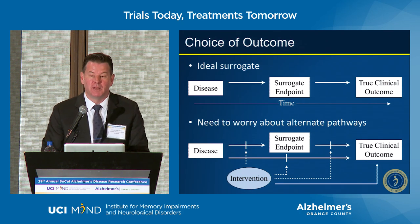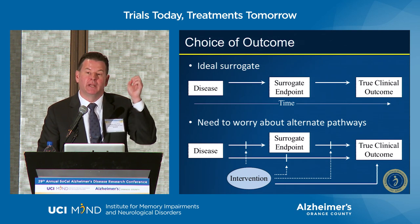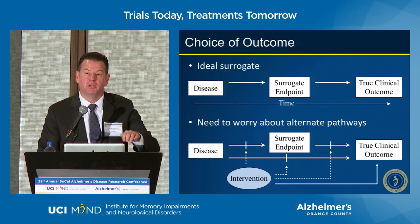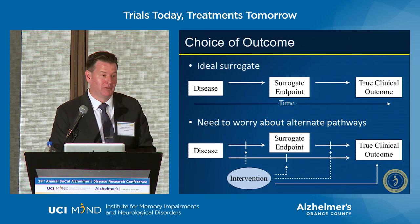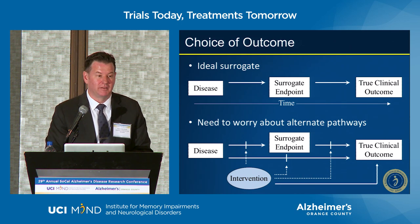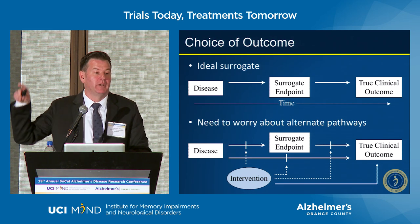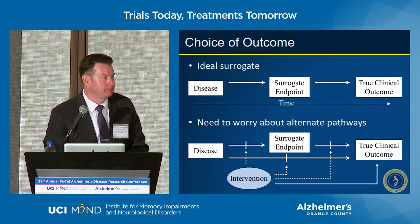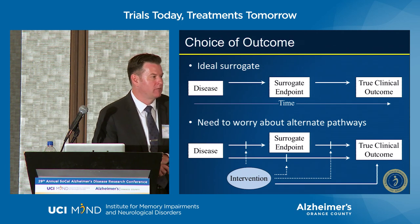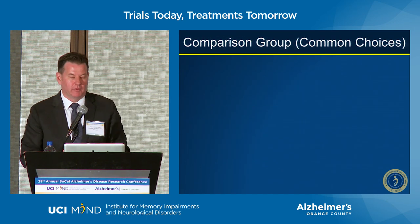A very famous clinical trial called the CAST trial looked at encainide and flecainide. They hypothesized that reducing arrhythmias would reduce mortality from heart attacks. The trial did reduce arrhythmia risk by about 50% — impressive. The trial stopped early. Why? Because there was a two-fold increase in death rate associated with encainide and flecainide. So arrhythmias were a dangerous surrogate in that case.